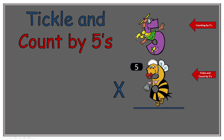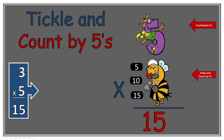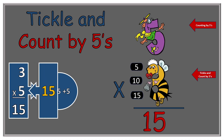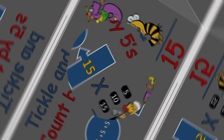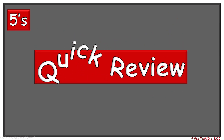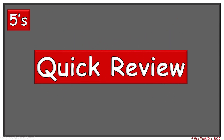Counting by fives we tickle Baby 3B. Here we go! 5, 10, 15. So 5 times 3 equals 15. He reminds us that multiplication is the same thing as adding the same number: 5 plus 5 plus 5, which of course is 15. But now we're going to do the quick review in fives so that we have them down to the point of automation.